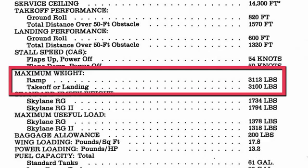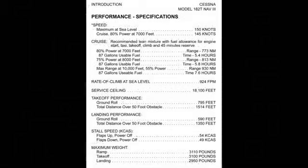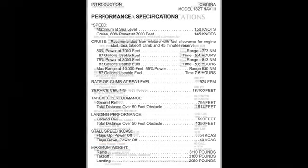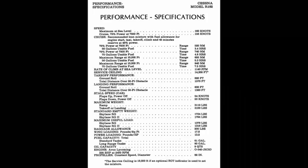You have to be very careful because on some bigger airplanes the takeoff weight may be 3,100 pounds but the landing weight may be lower. For example, in the newer Cessnas — the T-182 turbo Cessnas — the takeoff weight is 3,100 pounds but the landing weight is 2,950 pounds. For a 1978 Cessna 182RG, the takeoff weight and landing weight are both the same: 3,100 pounds.